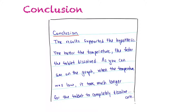The final steps of the lab report are writing a conclusion and an evaluation section. The conclusion is your summary of the results, and you discuss whether your results were supported by your hypothesis. If they weren't, give some reasons why. In this case, my results did support the hypothesis — the hotter the temperature, the faster the tablet dissolved. Make sure you refer back to your tables, graph, and observations to support your statements.